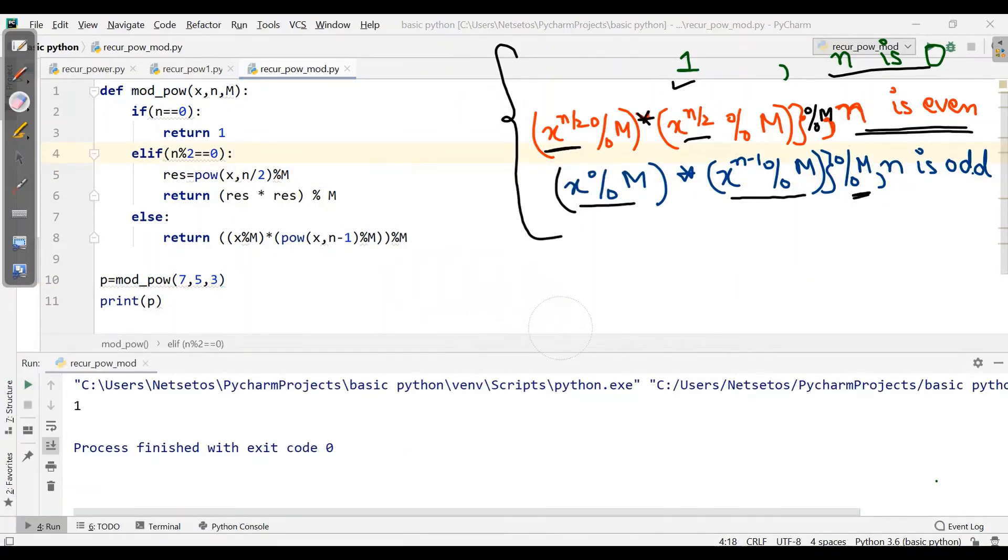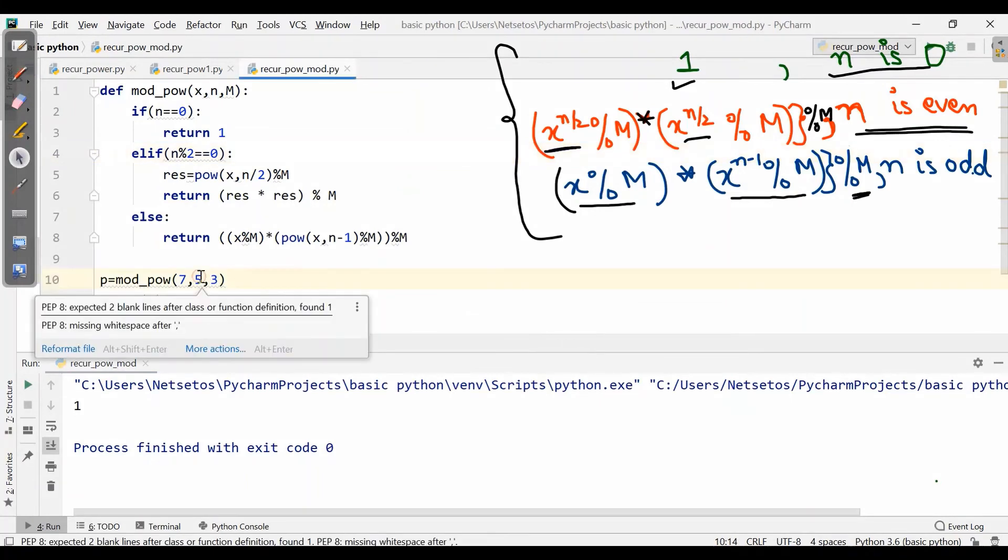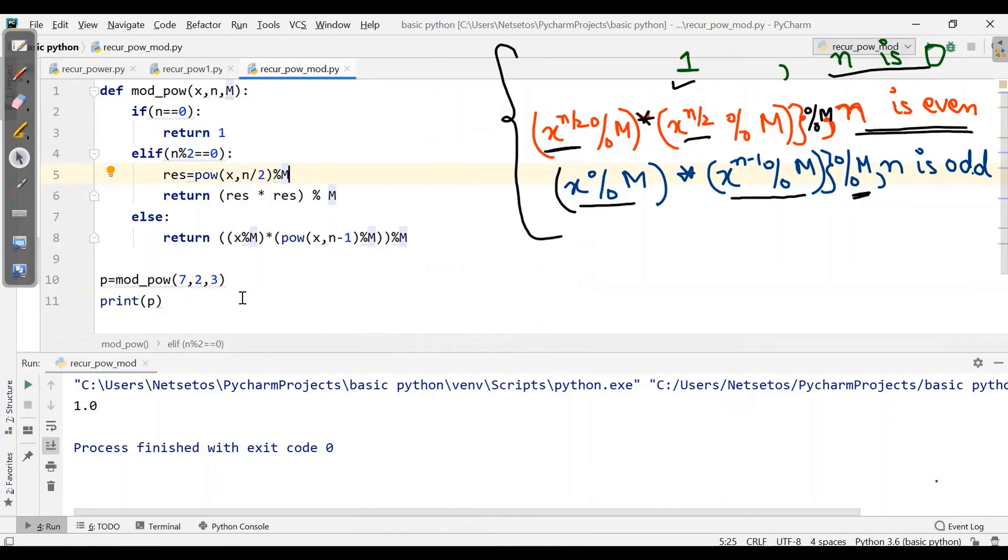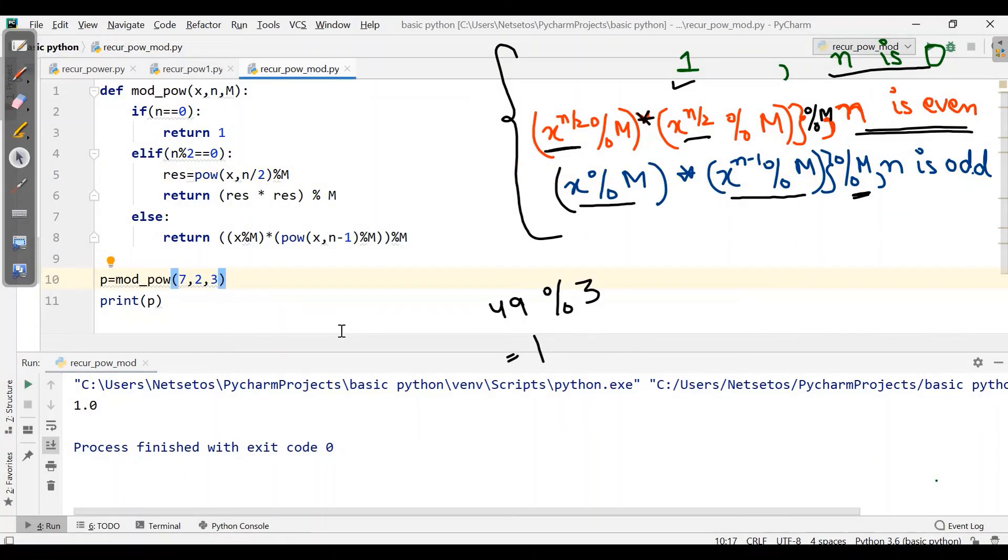Now I will check with smaller values also: 7, 2, and here when I run this and when I validate this, 7 times 7 is 49 mod 3, it will be 1. So let's see how it works internally.